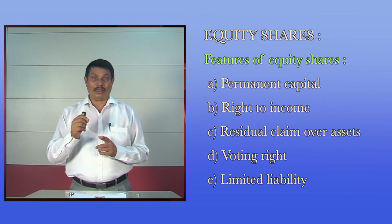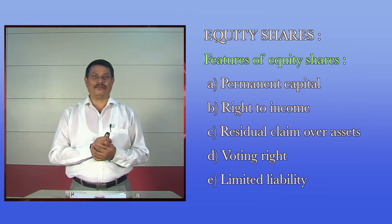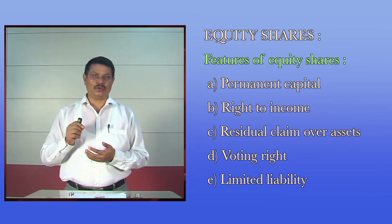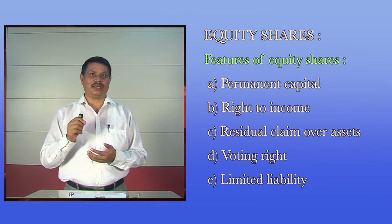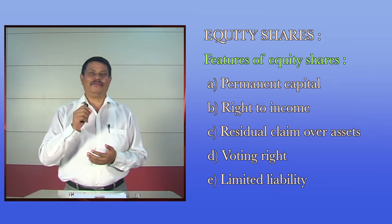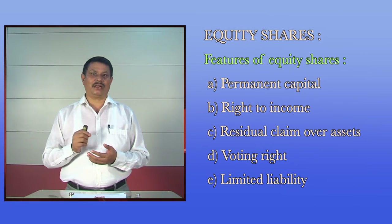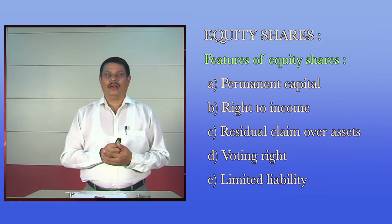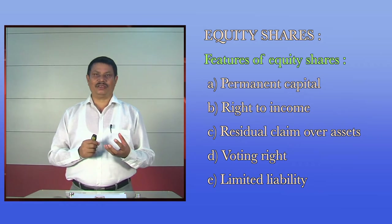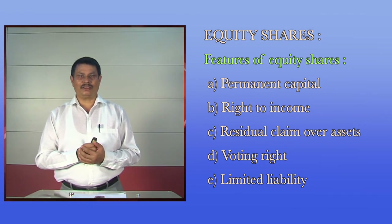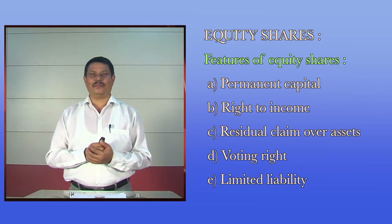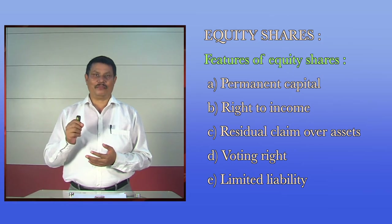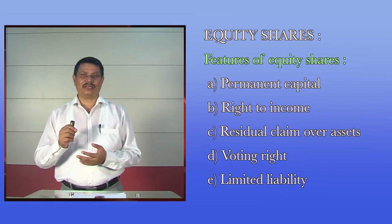Next is residual claim over assets. In case of liquidation, equity shareholders are the last to be paid. The assets are used first to settle the claims of outside creditors and preference shareholders. If anything is left, the equity shareholders get the right over such residue. The next feature is voting rights. Equity shareholders are the actual owners of the company and they participate and vote in annual general meetings for appointing directors. Each equity share carries one vote.